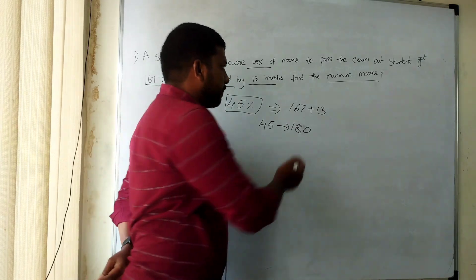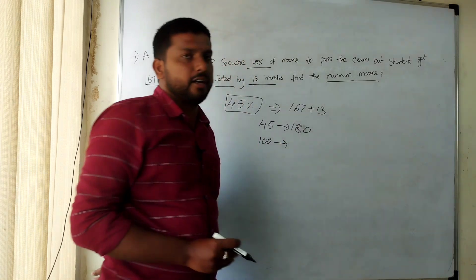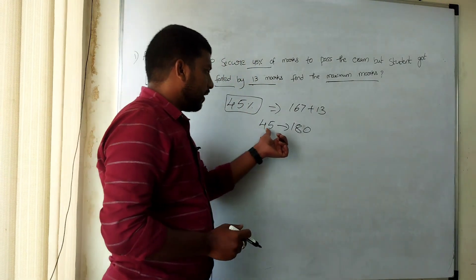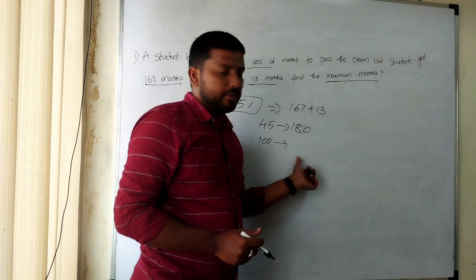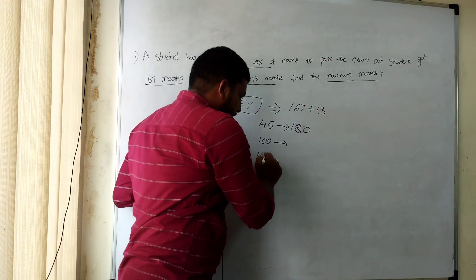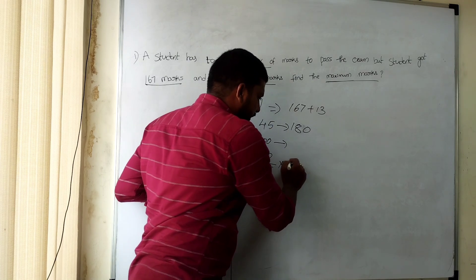Now find the 100% because we need the maximum marks. So 45% equals 180 marks. To find 100%, we will calculate it as 100 divided by 45 multiplied by 180.